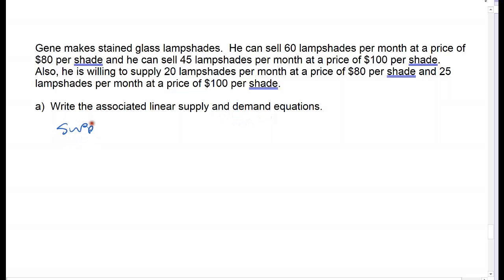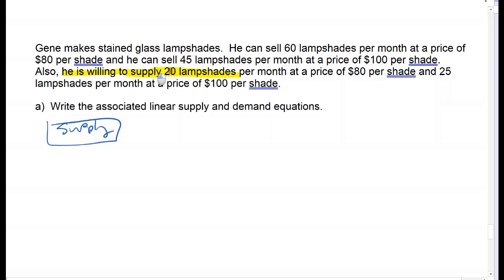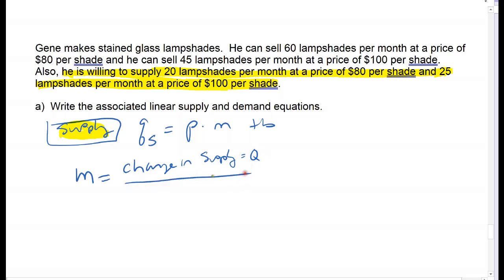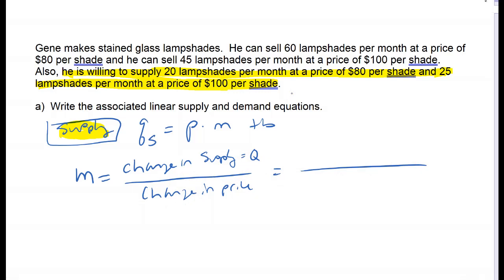We're going to find our supply equation and then our demand equation. The biggest thing is that everything is given in the same problem, so I have to make sure I pick the right numbers. The supply information is the last piece: he's willing to supply 20 at $80 and 25 at $100. I need to make sure I'm careful when I pick the supply data.